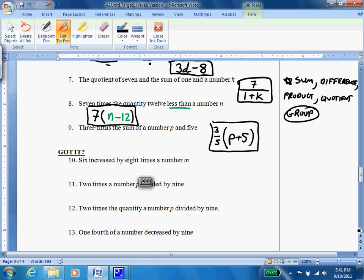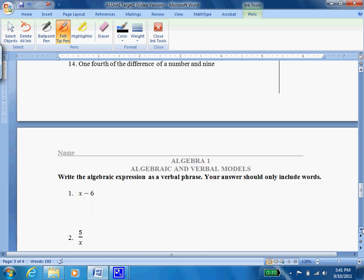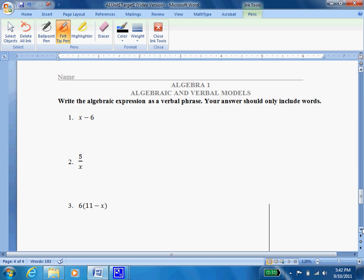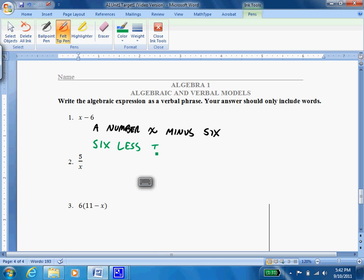So now, let's move on to going the other way. We're going to take algebraic expressions, and we're going to change them into verbal phrases. So in other words, we're going from numbers and symbols into words. We're going to try to remember to only write words in our answers. So here's the first one. I see these symbols here. And so I can write it two ways. I can either do the really simple one. I can do a number x minus 6. Or, if we go back and remember the backwards ones, I could also say this is 6 less than a number x.